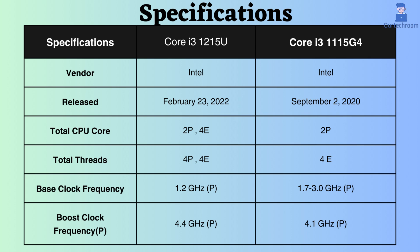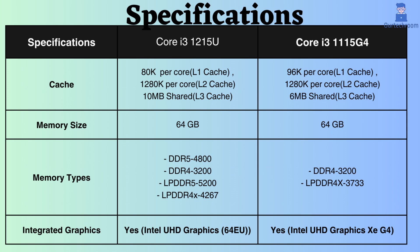The base clock frequency of the Core i3-1215G4 ranges between 1.7 to 3 GHz, whereas that of the Core i3-1215U is 1.2 GHz. With the higher base clock frequency of the Core i3-1215G4, it performs well under normal CPU loads. The boost clock frequency of the Core i3-1215U is 4.4 GHz, compared to 4.1 GHz for the Core i3-1215G4. Therefore, under heavy CPU loads, the Core i3-1215U delivers better performance.